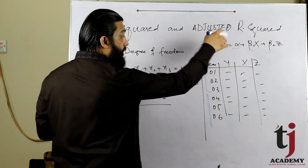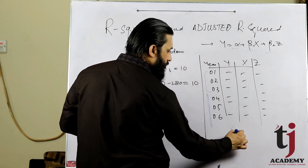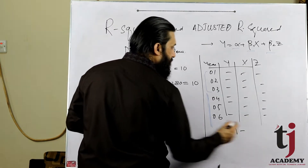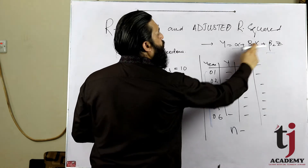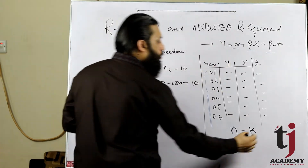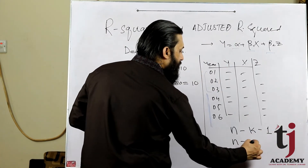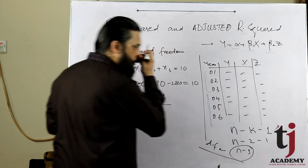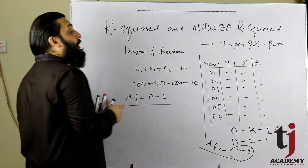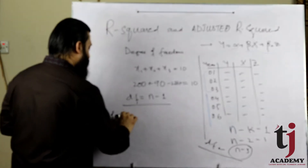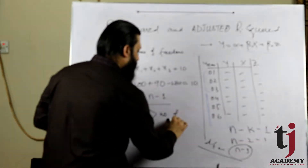Degree of freedom regression کے aspect سے کیا بنے گا: n (number of observations) minus k (slope coefficients یعنی beta) minus 1 (intercept کے لیے)۔ جیسے 2 betas اور 1 intercept تو n minus 2 minus 1 = n minus 3 آپ کے پاس degree of freedom آیا۔ اسی لیے یاد رکھیں کہ number of observations should be greater than number of parameters.